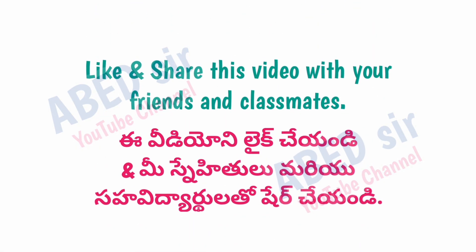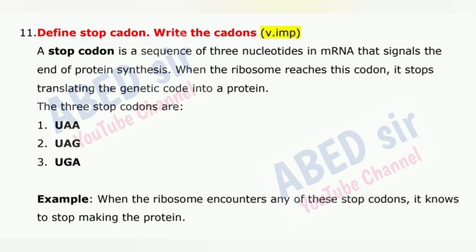Next important question is 11: Define stop codon. Write the codons. A stop codon is a sequence of 3 nucleotides in mRNA that signals the end of protein synthesis. When the ribosome reaches this codon, it stops translating the genetic code into a protein. The 3 stop codons are: 1. UAA, 2. UAG, 3. UGA. When the ribosome encounters any of these stop codons, it knows to stop making the protein.